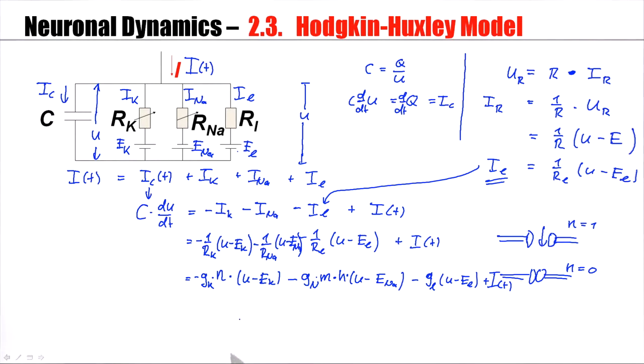Now, Hodgkin and Huxley found a description for the dynamics of these gating variables N, M, and H. For each of the gating variables, they wrote down an equation of the form dX/dt = (X - X0) / tau. X minus X0 with a minus sign means X likes to go towards X0. X0 is a fixed point. This fixed point is stable because of the minus sign. X likes to go towards X0 exponentially fast with the time constant tau. So this is a simple linear differential equation.